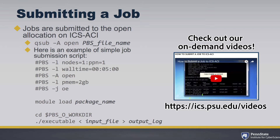You need to specify the nodes, processes per node, the amount of wall time. The dash A open is where that job's going. Processor memory: two gigabytes.